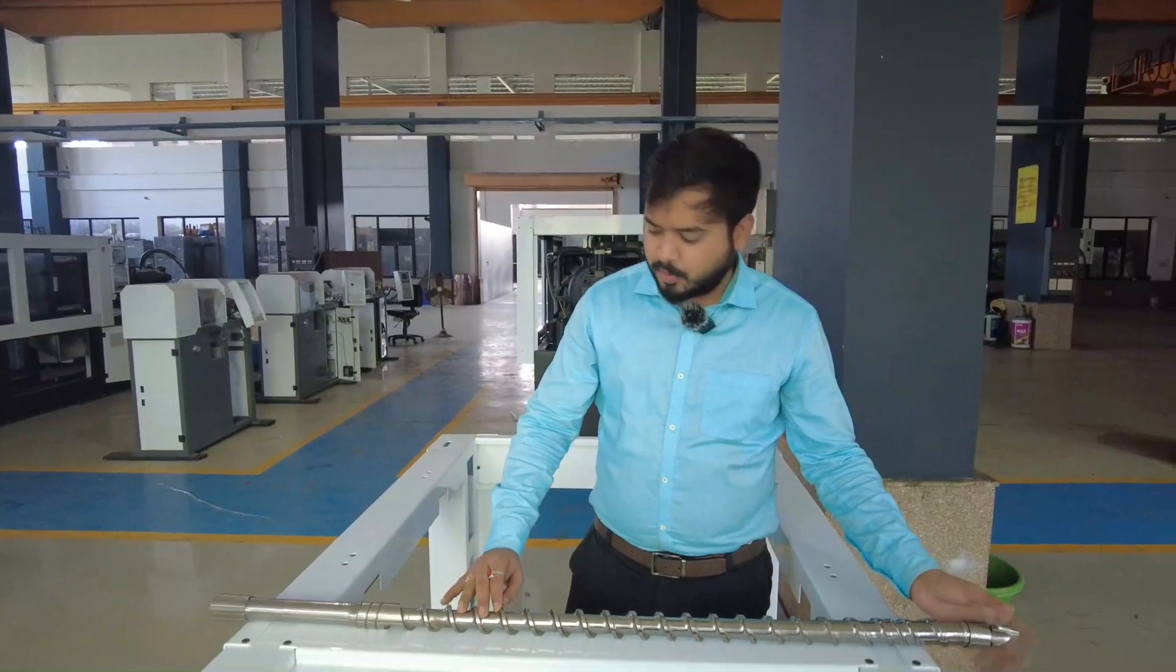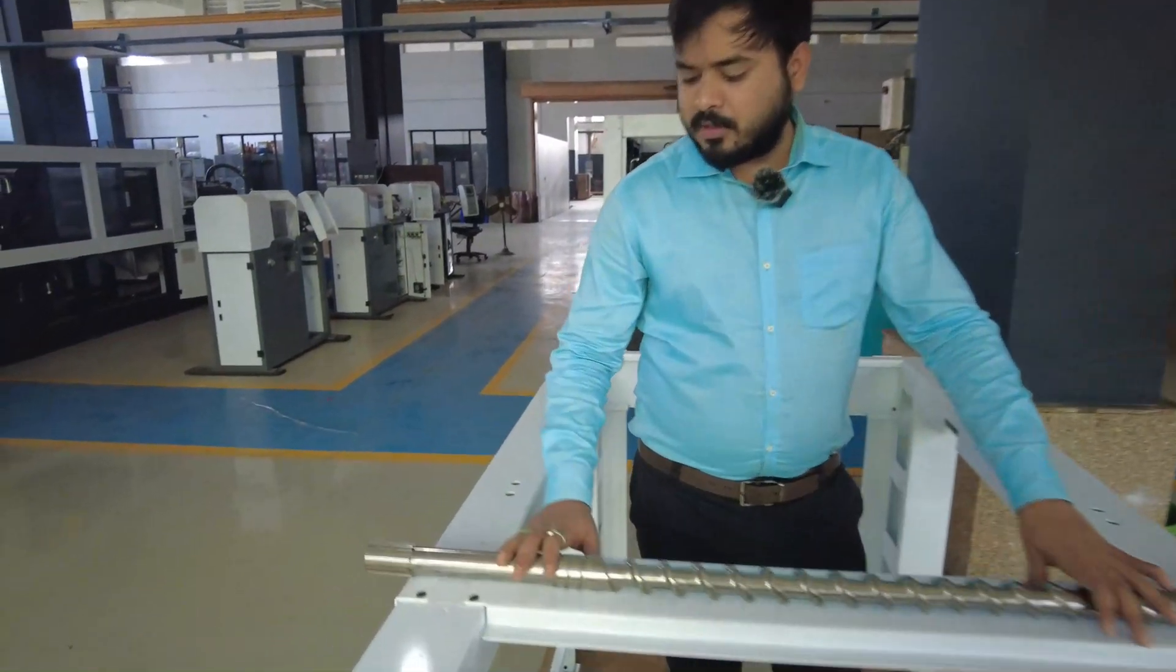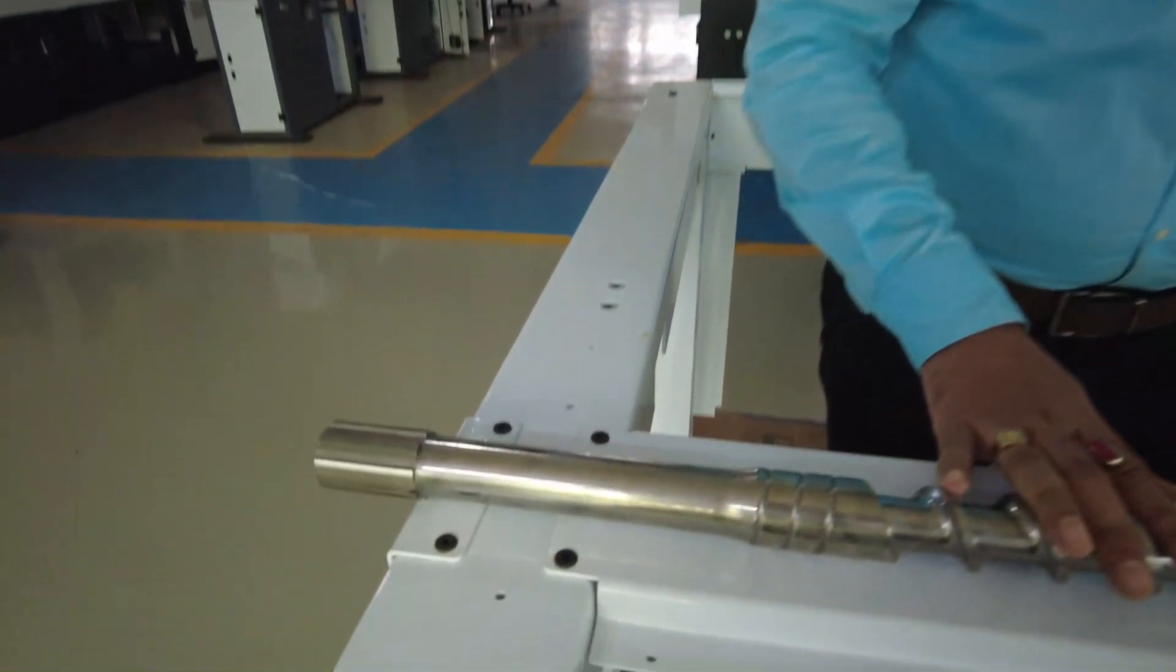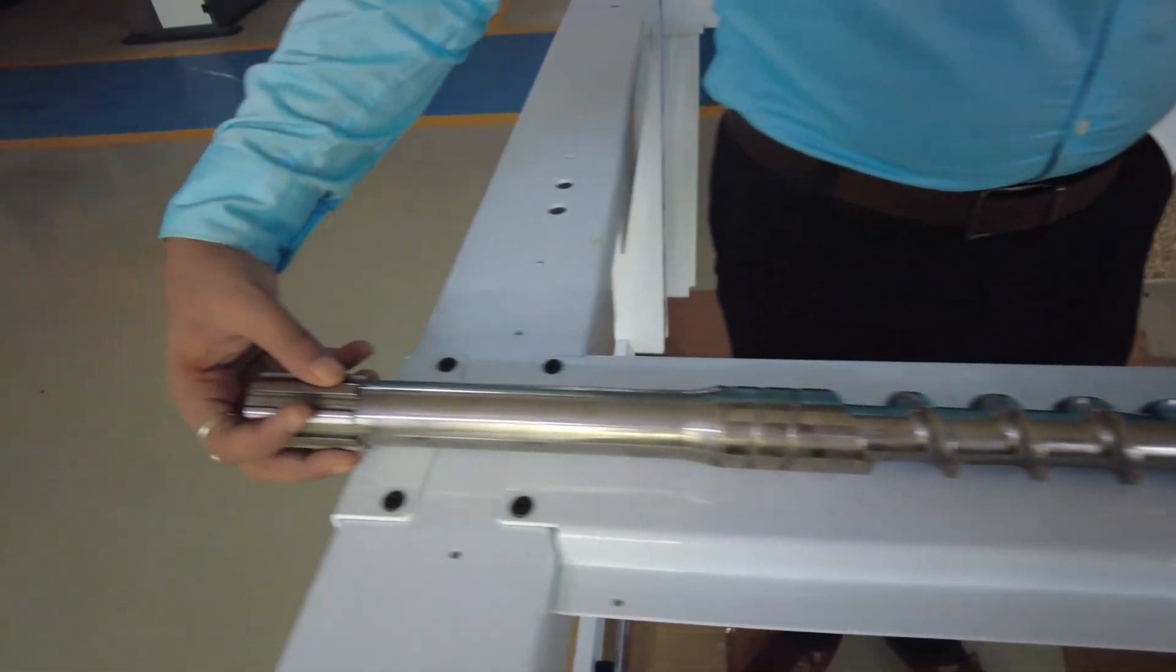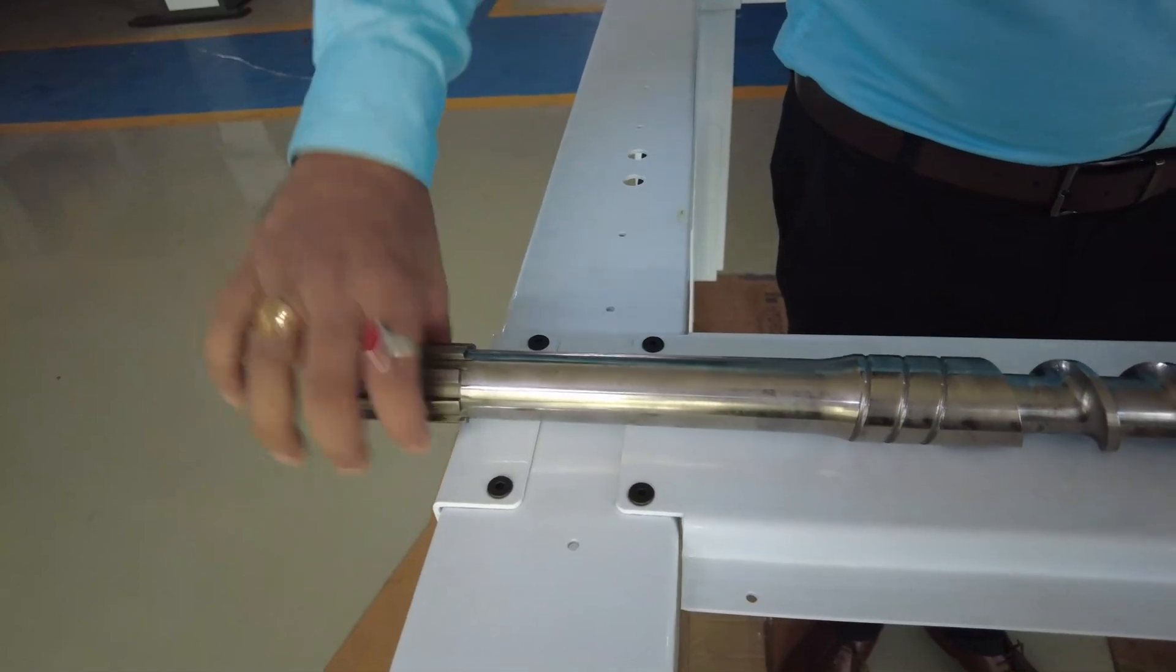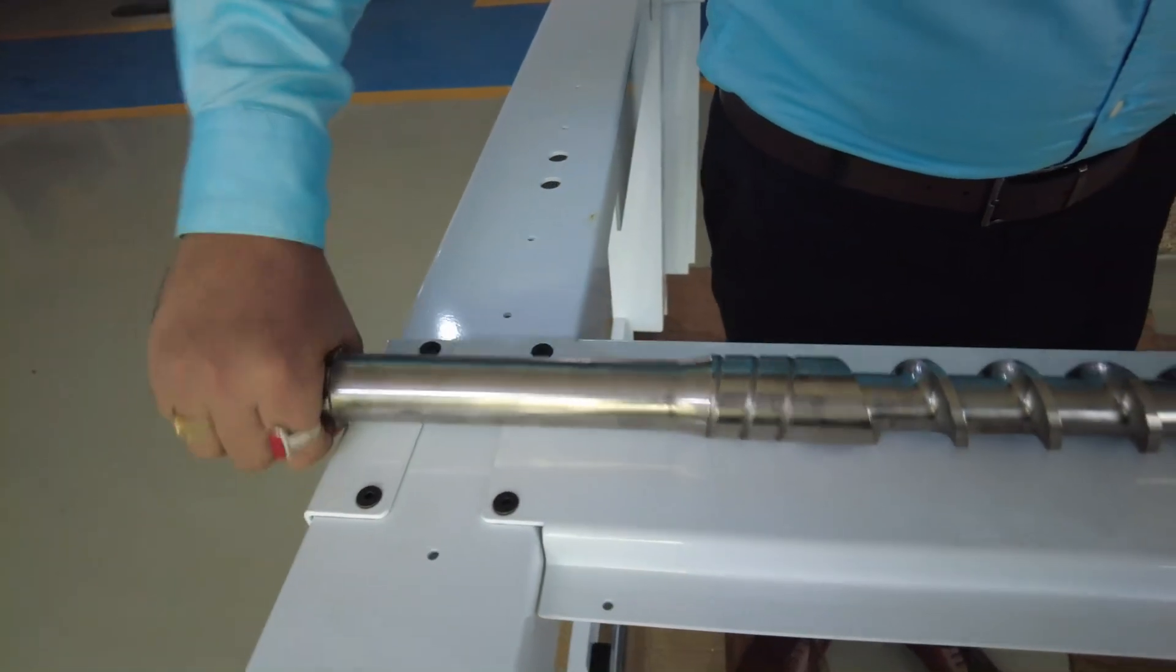Here is our reciprocating screw. You can clearly see that this particular screw is known as a general purpose screw. The screw is fixed with a hydro motor for rotation.